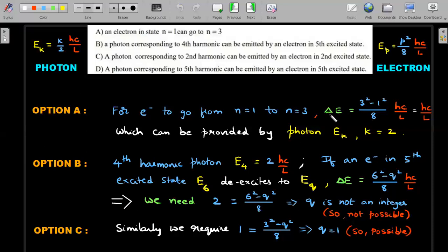If the electron has to go from n=1 to 3, the energy difference it requires is 3 squared minus 1 squared divided by 8 times hc by L, that means hc divided by L itself. You have to check whether the photon is available. For hc by L as the energy, k value should be 2, so it can be provided by a photon of second harmonic. Option A is possible.